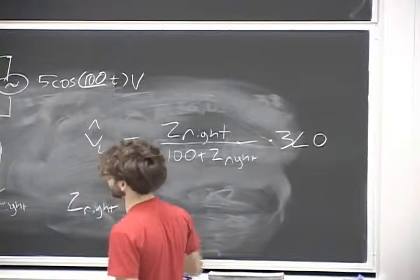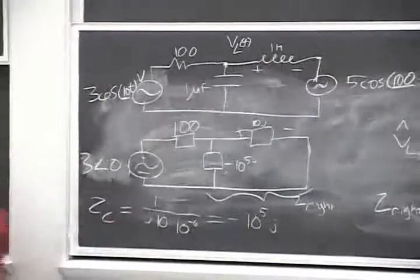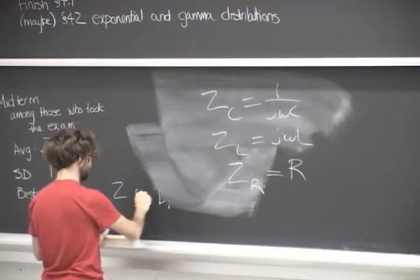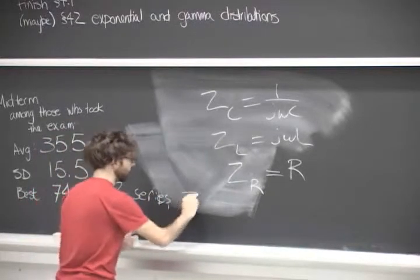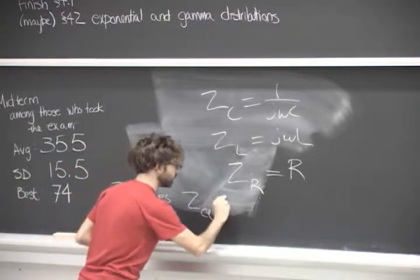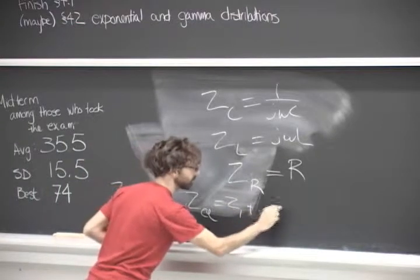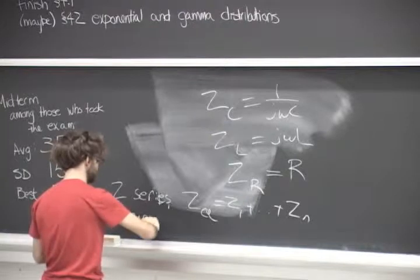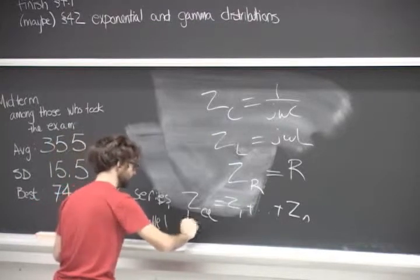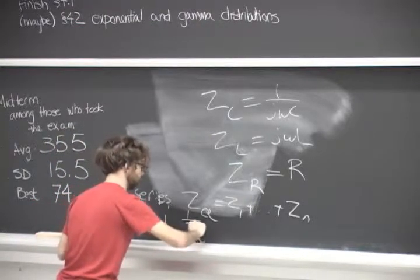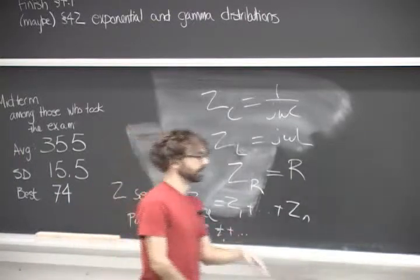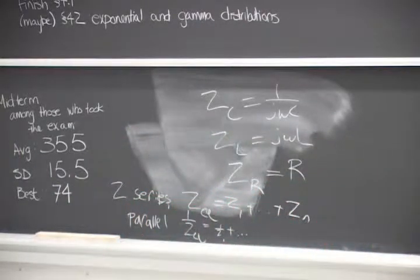So impedances. So I haven't said this explicitly a lot, but basically Z in series is just Z equals Z1 plus Zn. And then parallel is just like resistors, so that's one over Z. Okay.